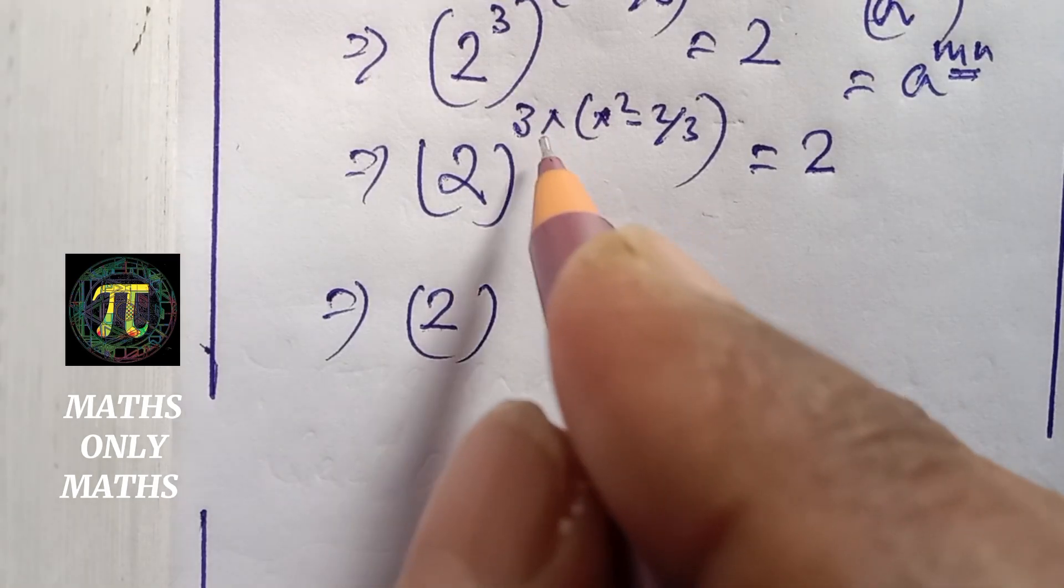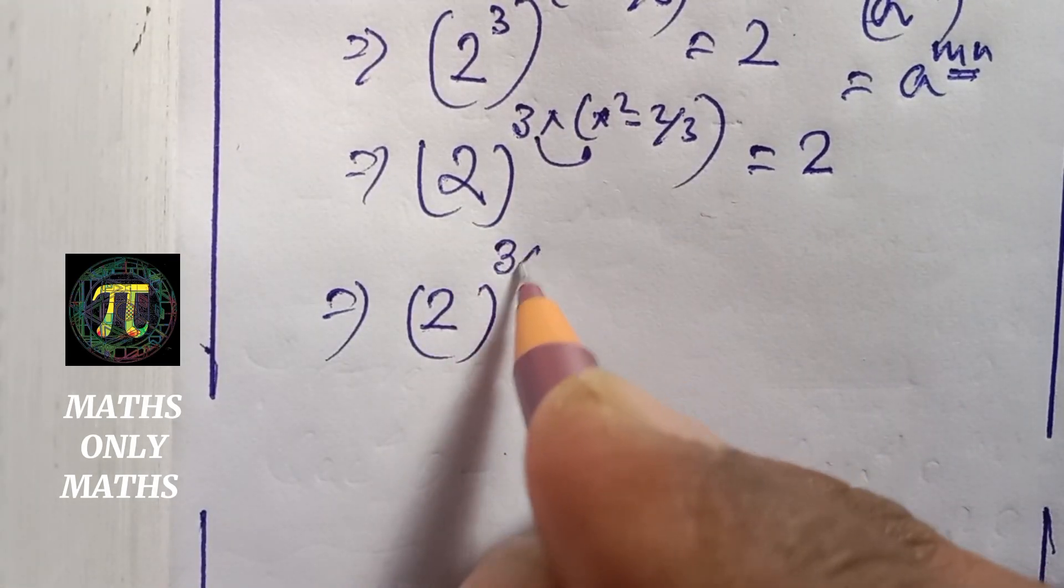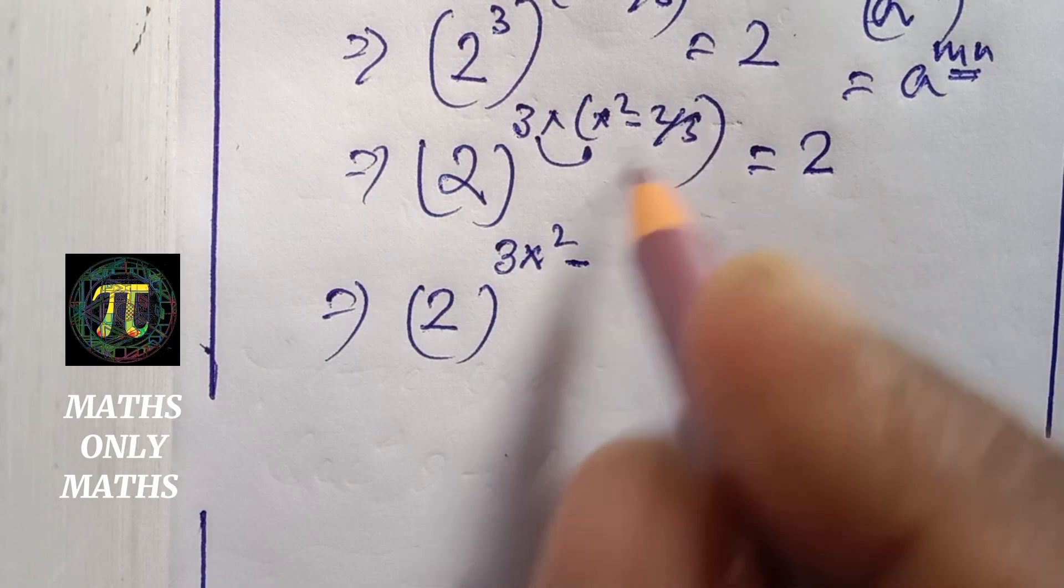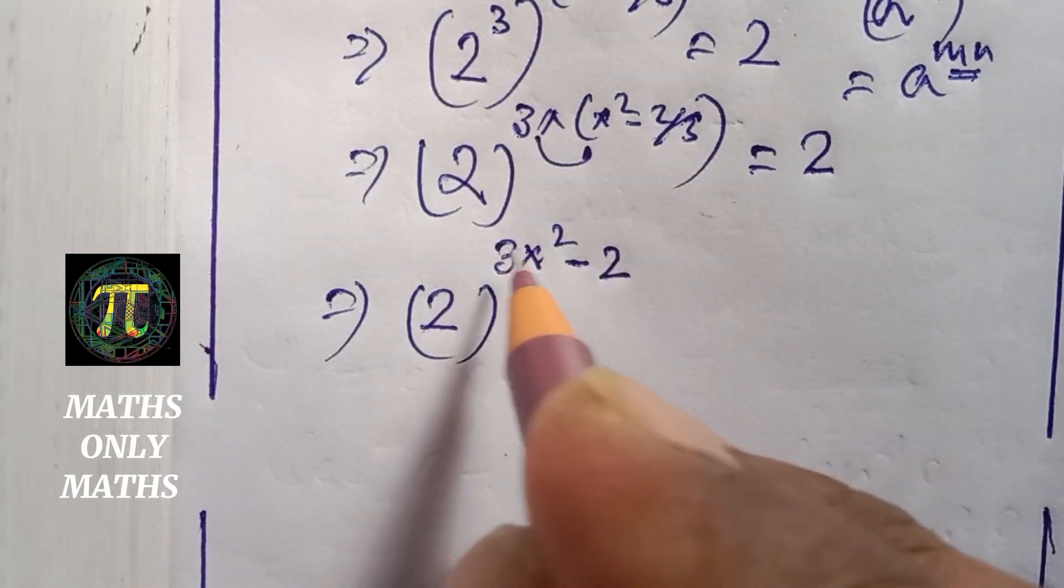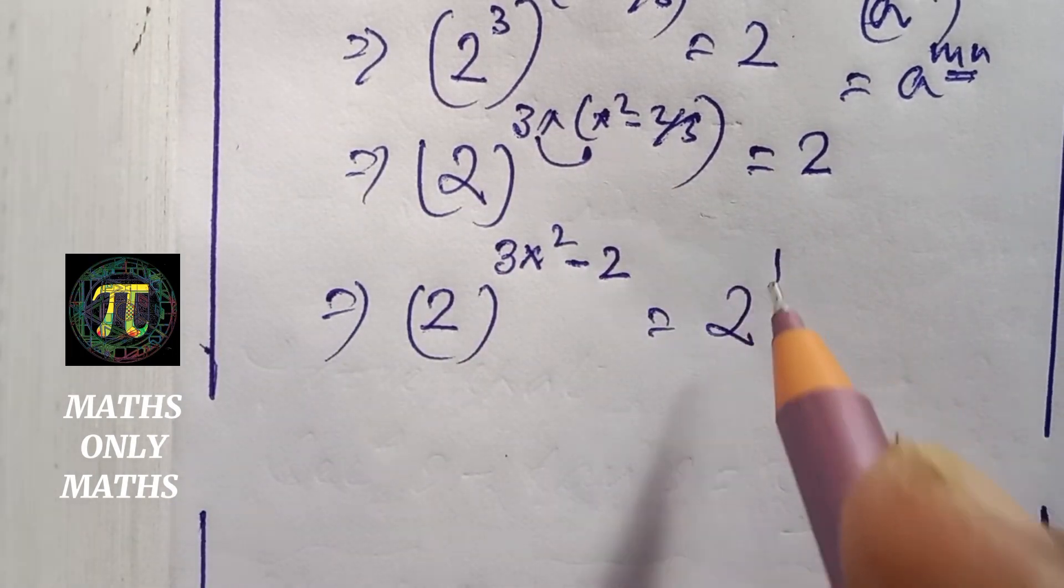I get 2 to the power 3x squared minus 2 equals 2 to the power 1.